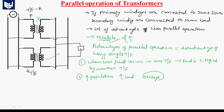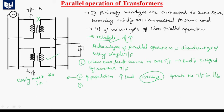It takes more cost. That is why we will operate the transformers in parallel. Whenever we are operating the transformers in parallel, with less economy, we can provide more power to the increasing number of consumers. That means we can satisfy the increase in load and easily meet the increase in load demand from time to time.